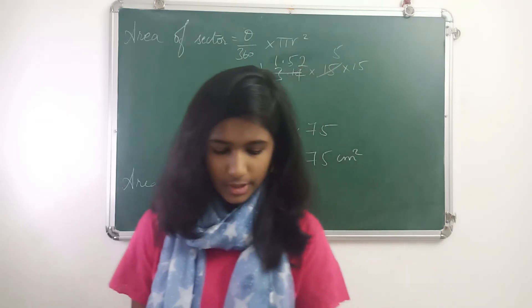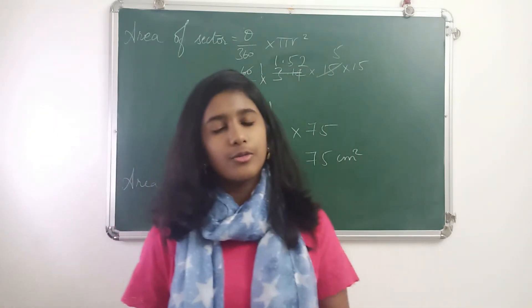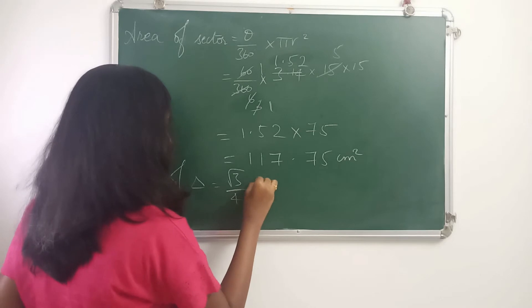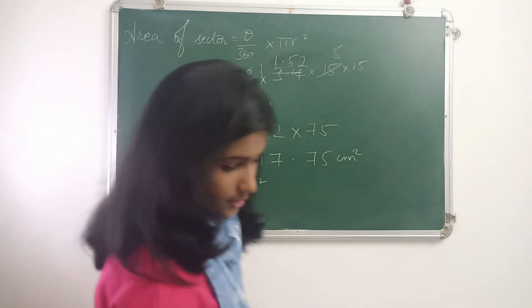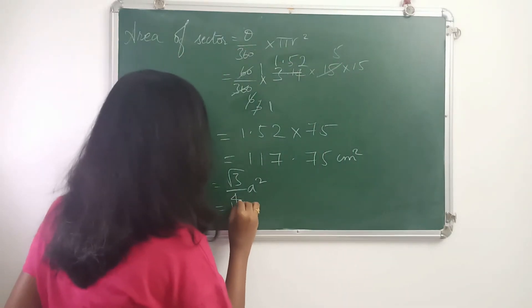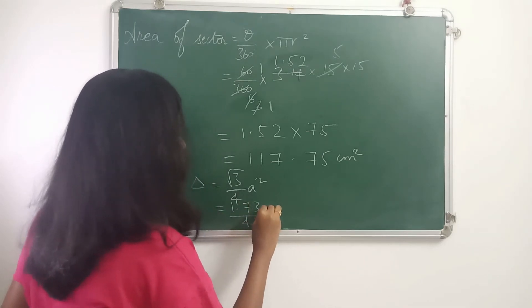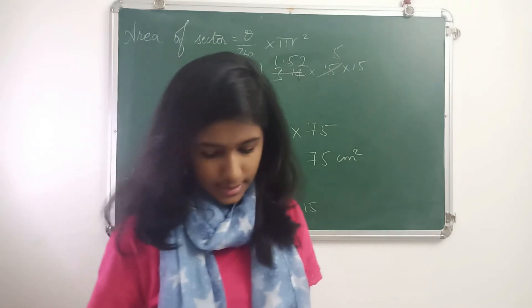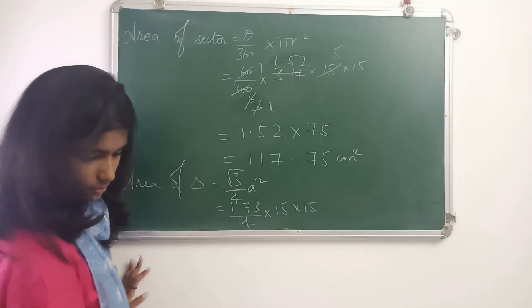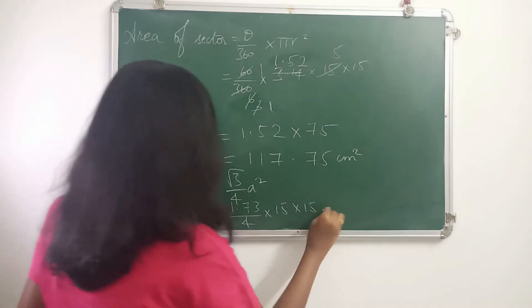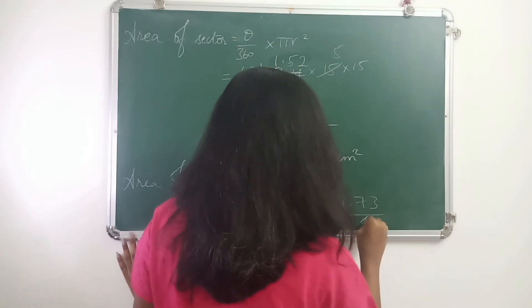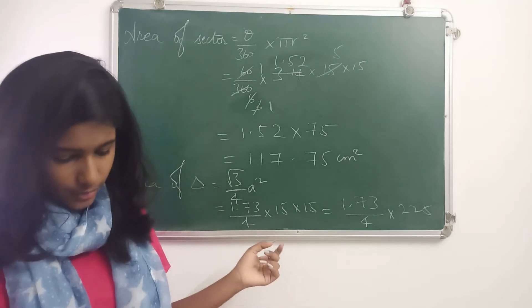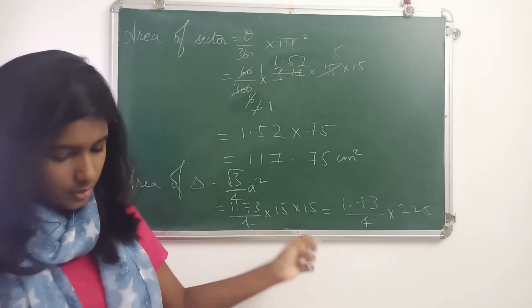So the chord will also be equal to the radius, making it 15 centimeters. We can use the formula for the area of an equilateral triangle: root 3 by 4 into a squared. In the question it is said to use the value of root 3 as 1.73. So we have 1.73 by 4 into 15 into 15.